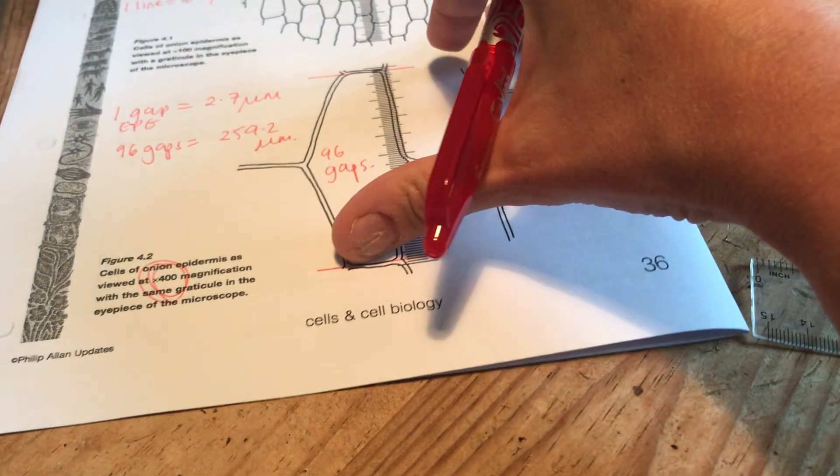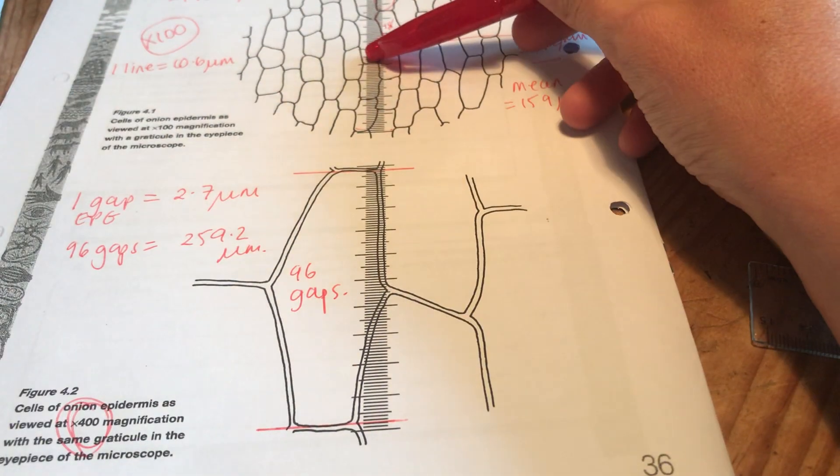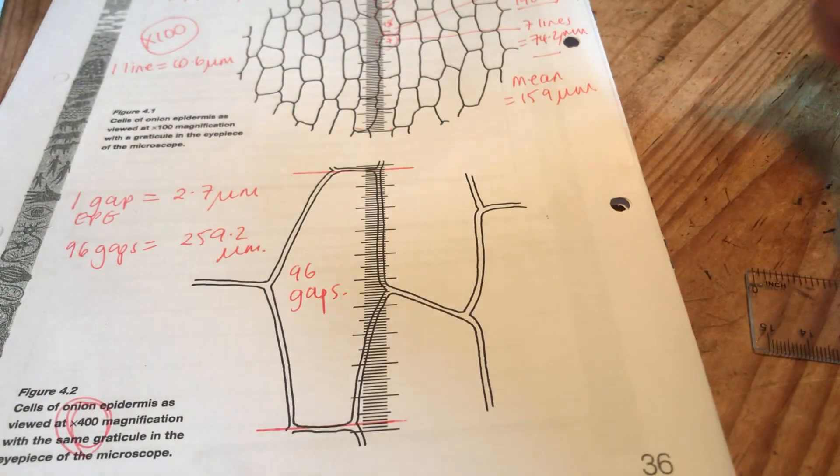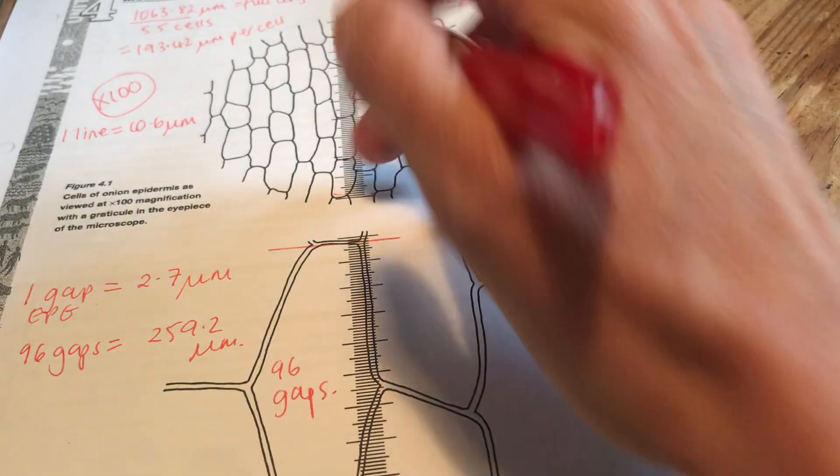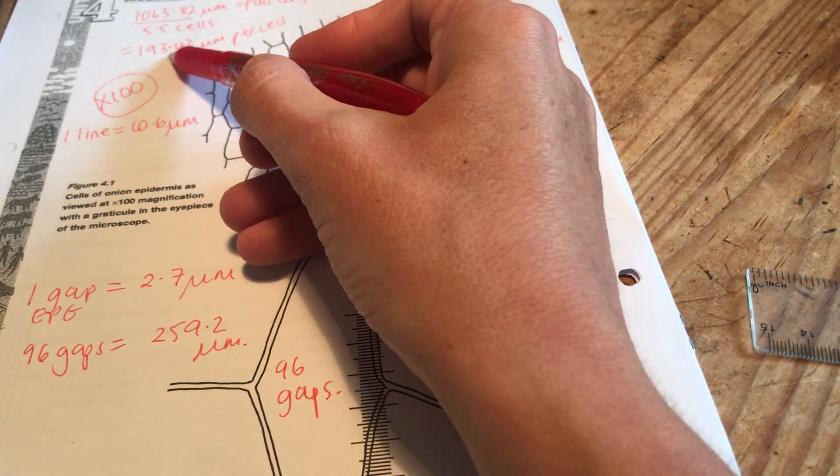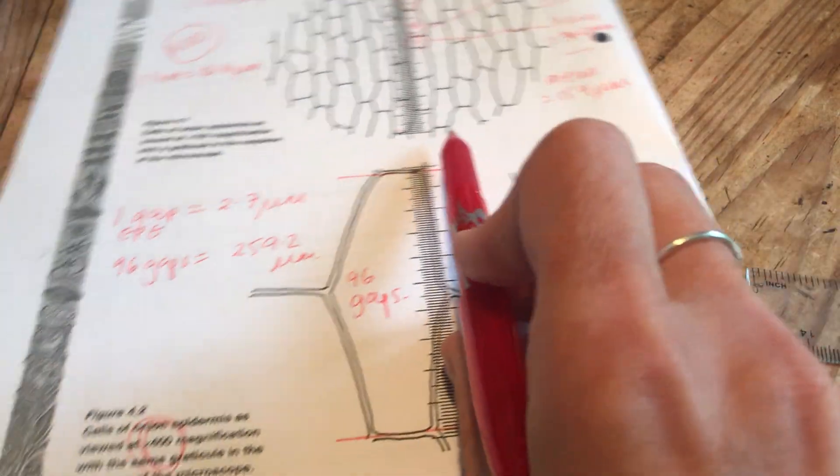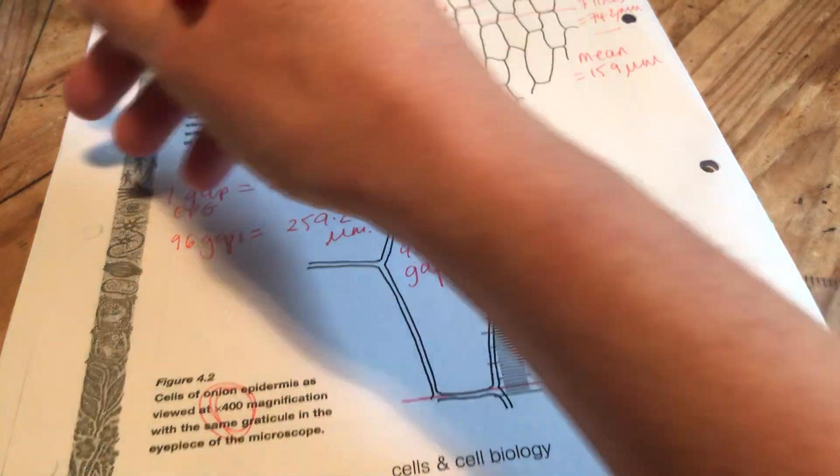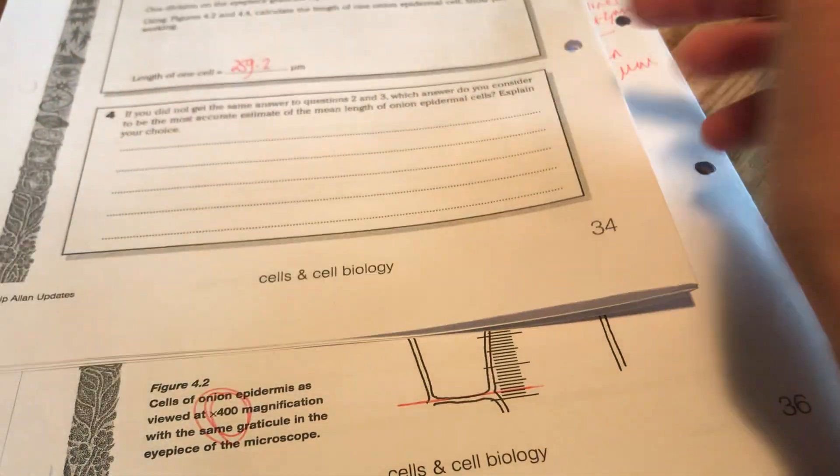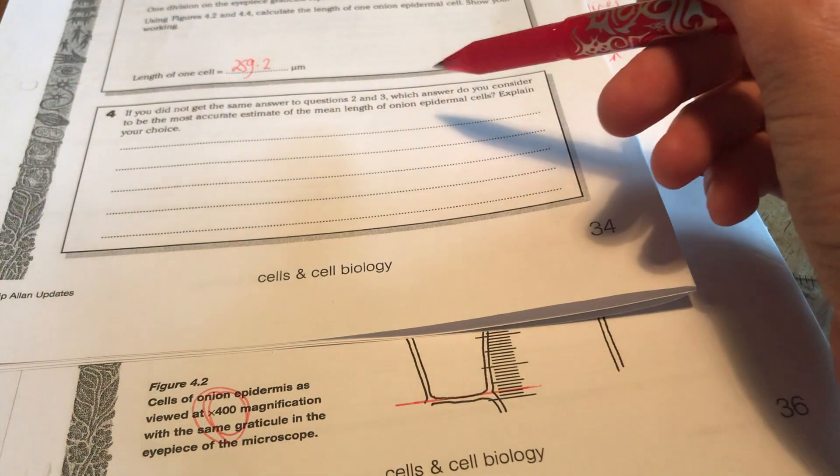So we've measured the cells here at a lower power and we've measured them at a higher power. We've actually got a slightly different answer, haven't we? We thought here our cells were about 193 micrometers or 159 micrometers. Now we're finding actually they are a bit bigger. This is saying if you didn't get the same answer to question two and three, which do you consider to be the most accurate estimate of the mean length?